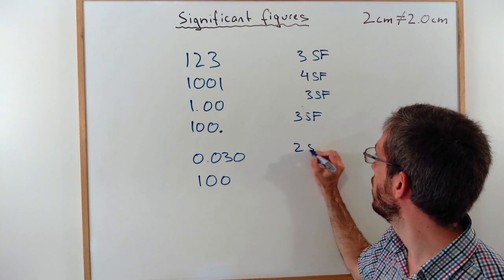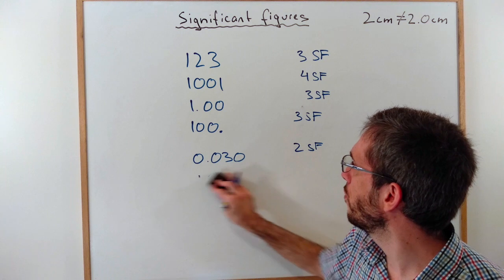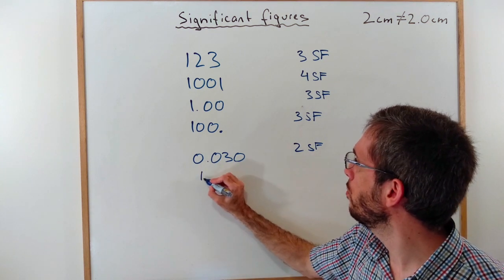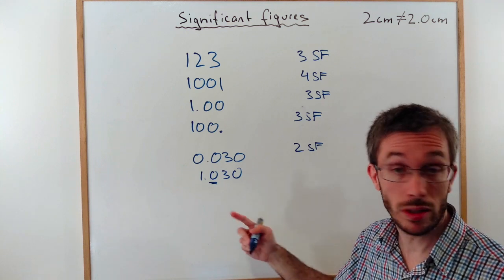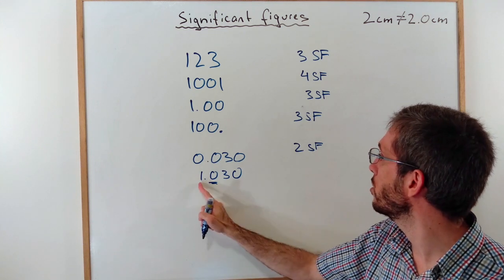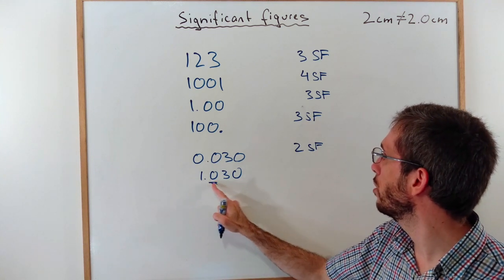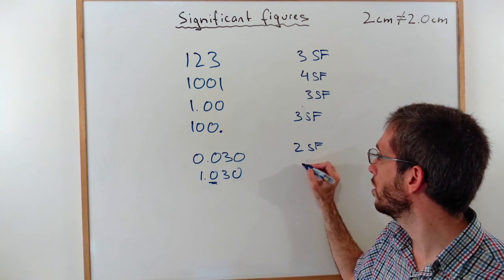As a comparison, if I would have had 1.030, then that zero suddenly counts because it is sandwiched between numbers, there is a number on the left. So I would have 1, 2, 3, 4 significant figures.